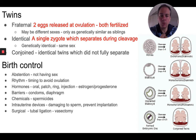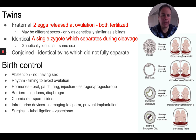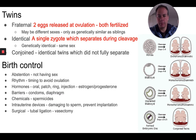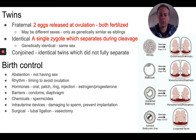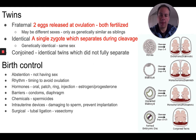There are times when that embryo splitting happens quite late in embryonic development, which can lead to conjoined twins — twins that are connected and share some of their tissue. Depending on where the connection is, how much is shared, and which organs are shared, the twins may or may not be able to be surgically separated.